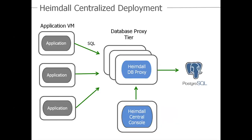The way that the Heimdall proxy is deployed is in the middle between the application and Postgres. You point the application to the database proxy tier, and the configuration and analytics are controlled by a central console. It's operationally elegant — you have a control plane, which is the central console, and the data plane, which is a bunch of proxies that represent the proxy tier that speak on behalf of Postgres.